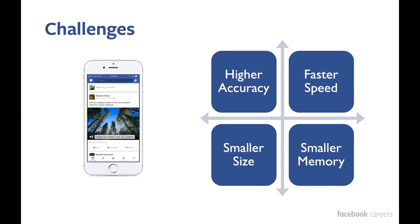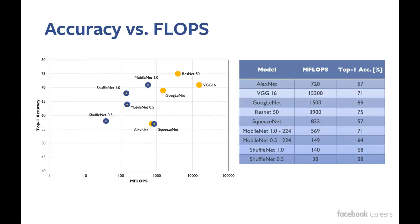The memory footprint refers to what's used when you're actually running your device during inference. You want the model size to be small, and also the packaged model size to be small, since it may be transported over the network or bundled in the app. So to give a sense of the accuracy and complexity of different models over their development over the years, shown here is a graph of all the popular networks.